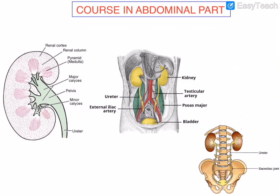The first stage is from the renal pelvis to the ureter proper. The ureter begins within the renal sinus as a funnel-shaped dilatation called the renal pelvis, which is formed from two or three major calyces. The pelvis runs from the hilum of the kidney, descends along its medial border, and gradually narrows till the lower end of the kidney where it becomes the ureter proper.